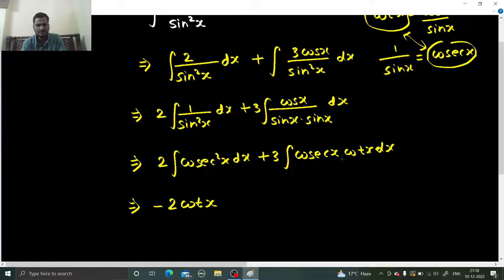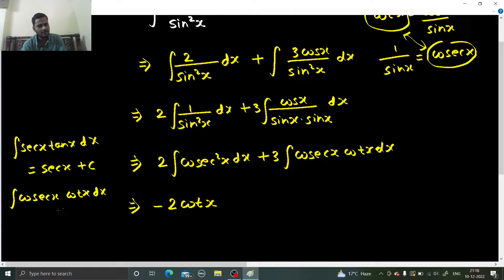This I haven't used till now, but let me tell you: integral of secant x, secant x tan x is giving you secant x plus a constant C. And integral of cosecant x cot x is giving you